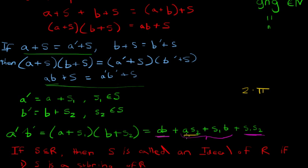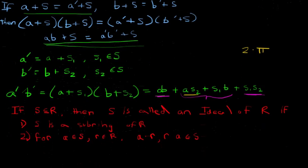As long as you have an ideal, you can mod out by it and form a factor ring, and the definitions of coset addition and multiplication are all well-defined. Because the only issue was those cross-multiplication terms, and with an ideal those are all elements of S — giving us AB plus something in S, which equals A'B', confirming well-definedness. In the next video we will do some examples of ideals and factor rings.